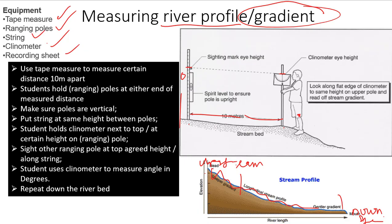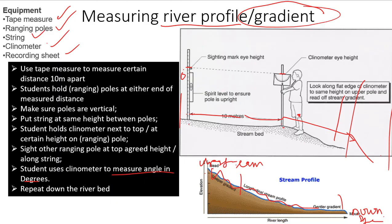Sight the other ranging pole at the point where the string is fixed, then take your reading in degrees using the clinometer. Repeat this process along the bed of the river, measuring another 10 meters each time, moving from the upstream region to downstream. If done correctly and plotted on a graph, the result will show the long profile of the river changing from a steep slope upstream to a gentle slope downstream.